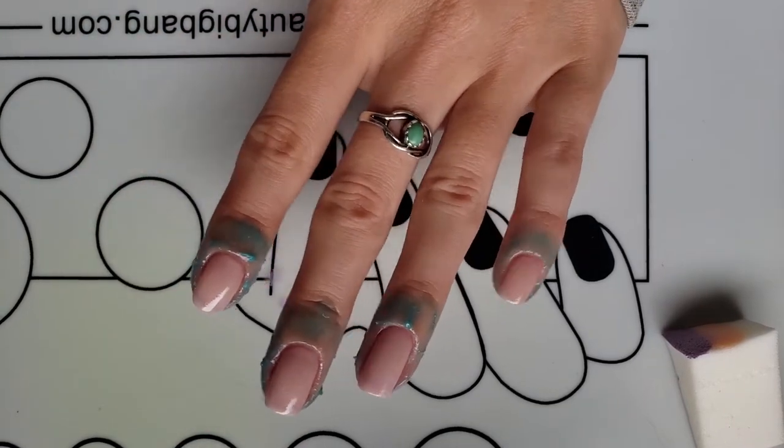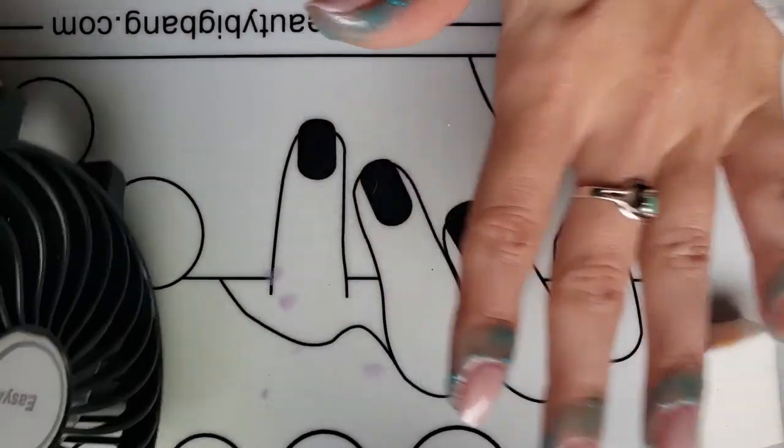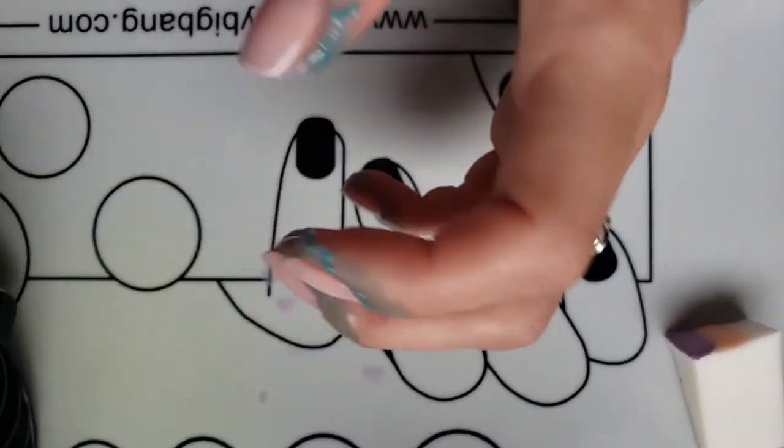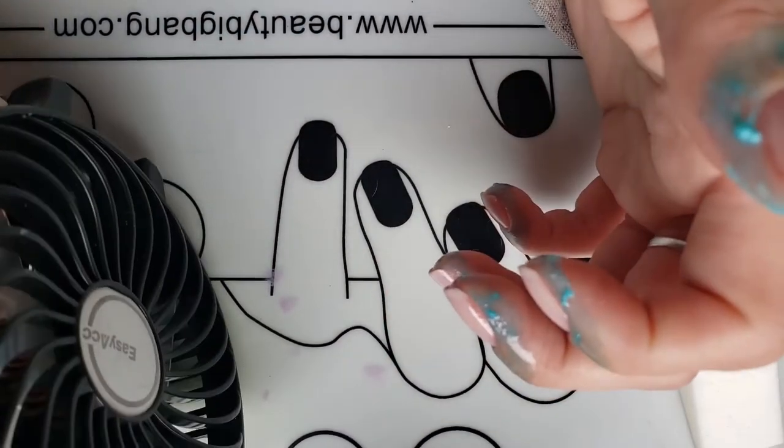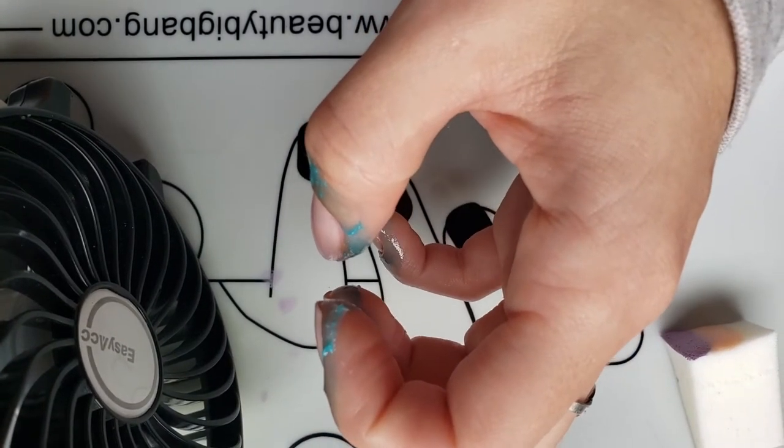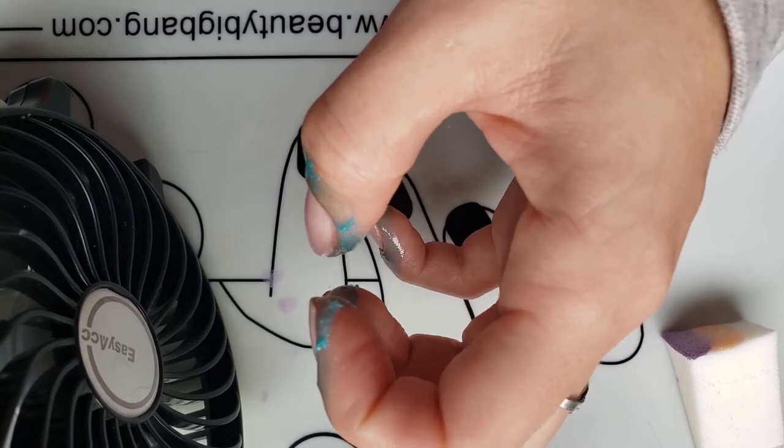So I'm going to go ahead and keep applying this to all of my nails. And then in between coats, make sure it's completely dry. So I have a fan. I'll have it linked down below in my Amazon storefront. But I have a fan and I just kind of let this fan dry the coat. It doesn't take super long because you don't have that much polish. But you just want to make sure that you're drying the coats each time.